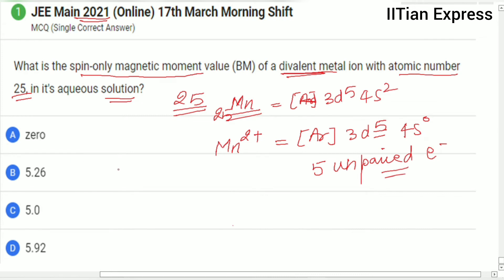We have a formula to calculate spin-only magnetic moment, and that is μ equals root over n multiplied by n plus 2, where n is the number of unpaired electrons.